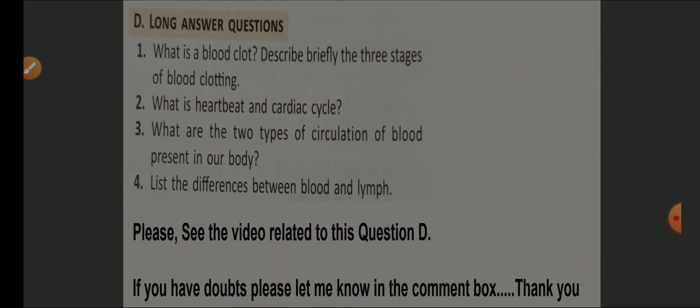Long question answers include: what is a blood clot and describe the three stages of blood clotting; heartbeat and cardiac cycle; the two types of circulation in the body; and differences between blood components. These have already been covered in the chapter videos, so please refer to those videos for detailed answers.